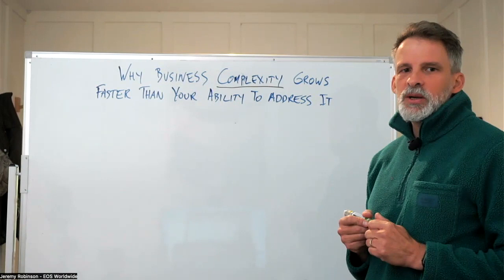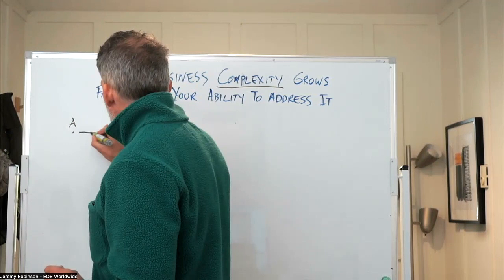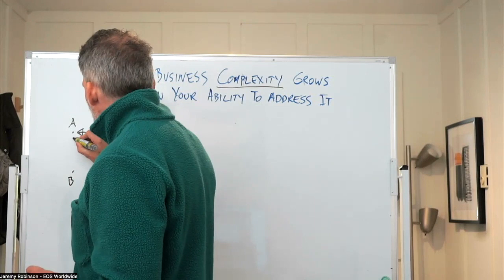So let's say you've got two people in an organization. So between those two people, you essentially have two lines of communication, back and forth. Now, if you add one more person to that organization, you now have six lines of communication.